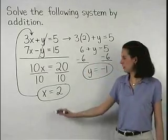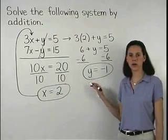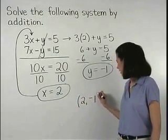So x equals 2 and y equals negative 1 and we can write our answer in the form of the ordered pair (2, -1).